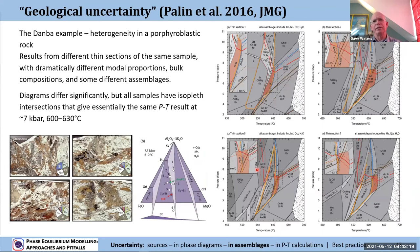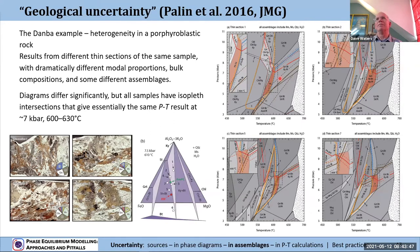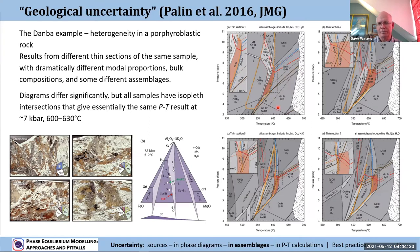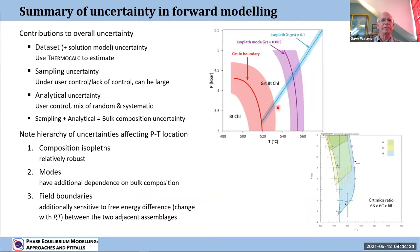Taking seven different thin sections and calculating phase diagrams for all of them — four presented here — each has very different mineral proportions visible in the pie charts, and very different bulk compositions on an AFM projection. These are actually the four most similar calculated phase diagrams. When you plot isopleth intersections on them, you get essentially the same PT result — around seven kilobars and the low 600°C. This means that if you put a bulk composition and modal proportions analysis into the problem, you can retrieve essentially that same result back again. That's a little comforting.